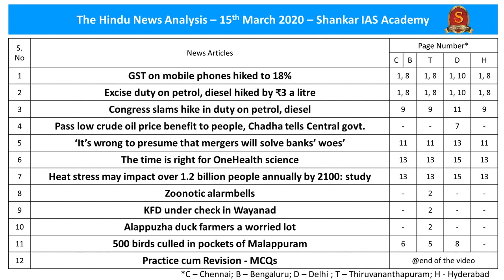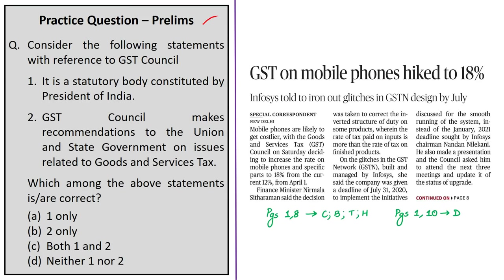Let us now start our analysis. This news article reports that GST on mobile phones has been increased from 12% to 18% with effect from 1st of April 2020. This decision was basically taken to correct the inverted structure of duty on some allied mobile parts, because in the existing structure the rate of tax paid on the inputs — the raw materials of mobile phones — is more than the rate of tax levied on the finished product.